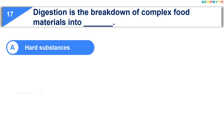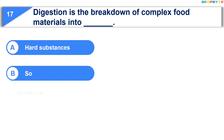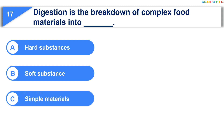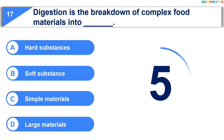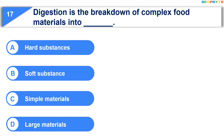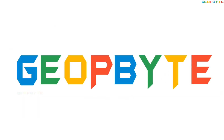The last question is: digestion is the breakdown of complex food materials into dash — Option A: hard substances; Option B: soft substances; Option C: simple materials; Option D: large materials. Your time is up and the correct answer is Option C: simple materials.